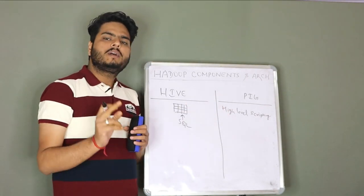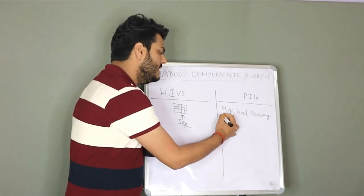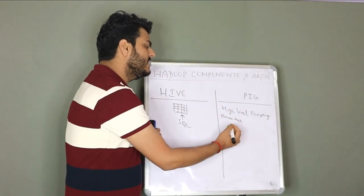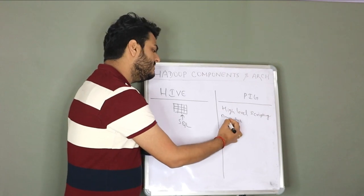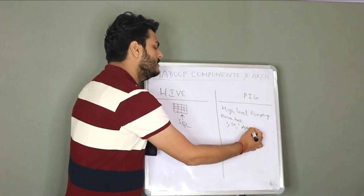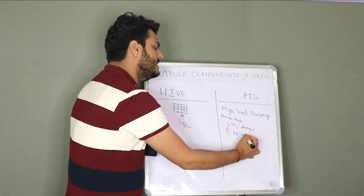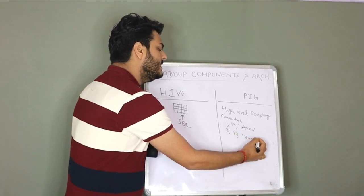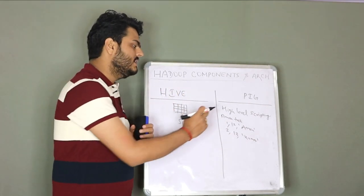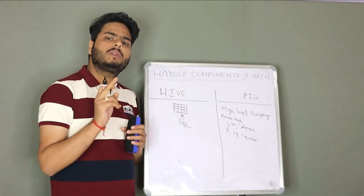So how PIG scripts are written? I will give you a simple script. Let's say there is a file Aman.txt. This file is sitting in HDFS. And Aman.txt has student ID, student roll number and student name. Like this data is sitting in file called Aman.txt in HDFS. So how you can access that data in PIG is you can use the PIG script. A sample script will look like this.